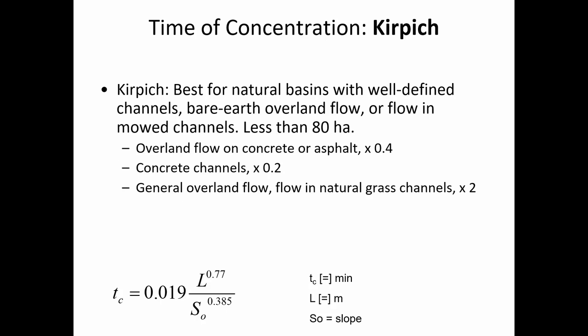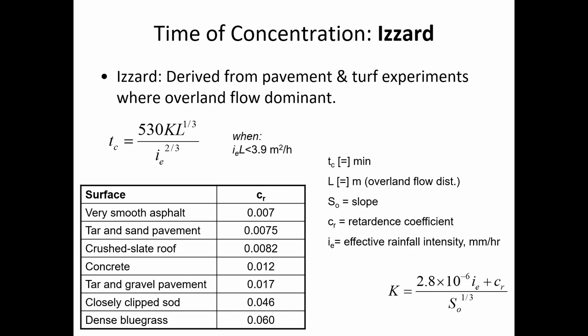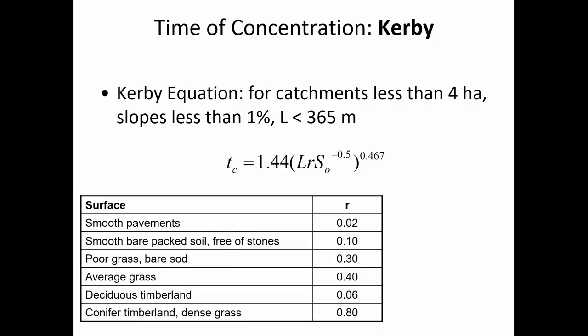You're going to have to do this for the homework: calculate the time of concentration using the Kirpich, Izzard, FAA, and kinematic wave equations for overland flow on asphalt. Take the Kirpich equation, solve it, and then multiply by 0.4 for asphalt to find what time it predicts. The Izzard equation is mainly for pavement and turf, with retardance factors to account for surface differences — a different empirical way of correcting without relying on an n value.